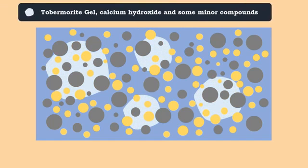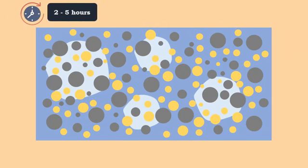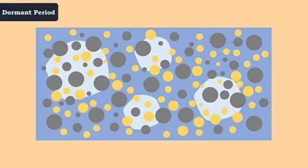Hydration products such as tobermorite gel, calcium hydroxide, and some minor compounds slowly start depositing on the outer periphery of the nucleus of hydrated cement. Generally, this reaction proceeds slowly for two to five hours. This period is called the induction or dormant period.